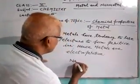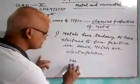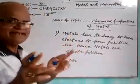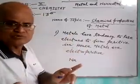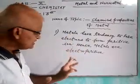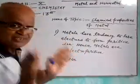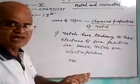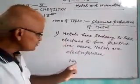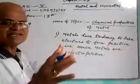Take sodium as an example. Sodium's outermost orbit has one electron, which is loosely attached.